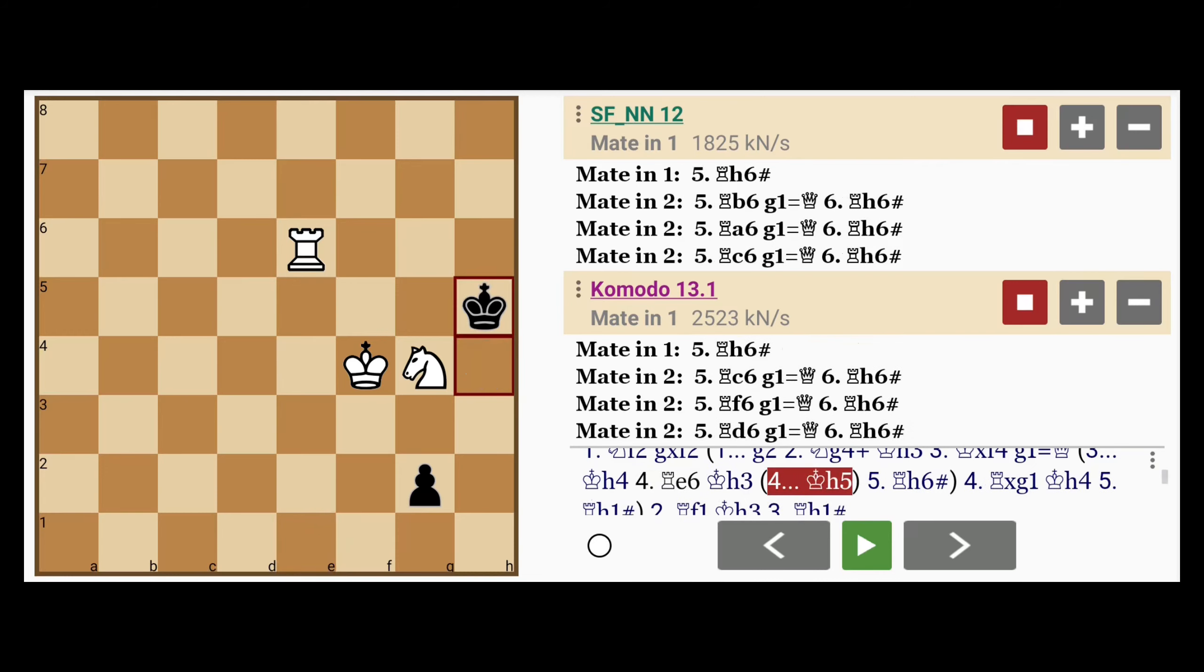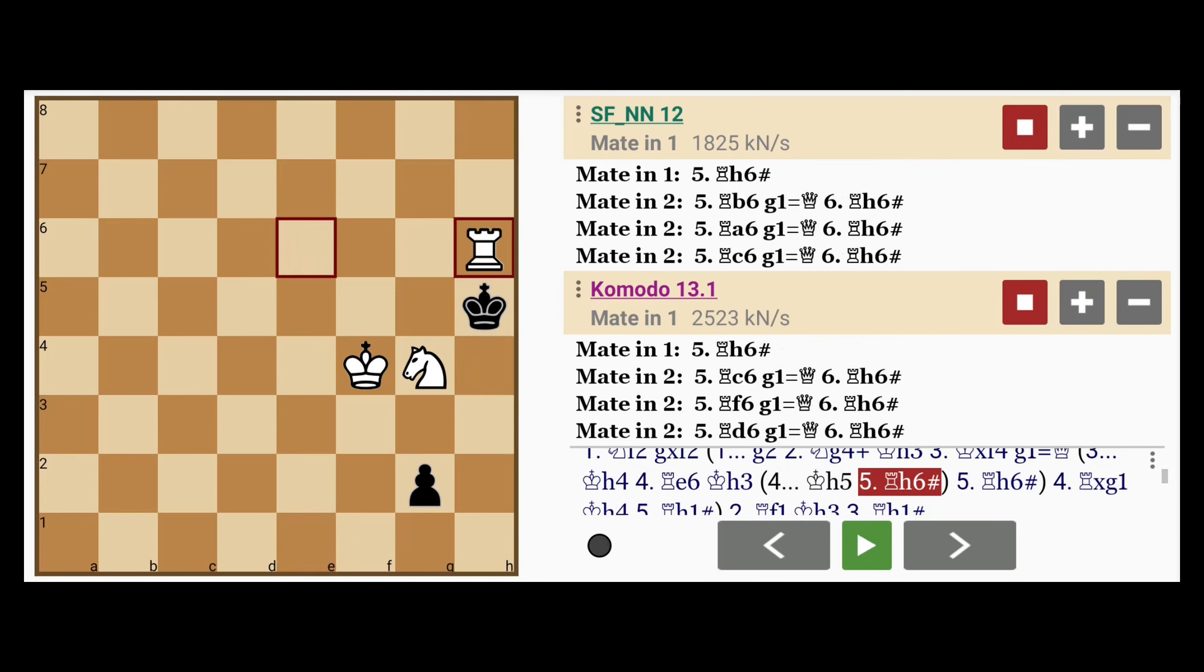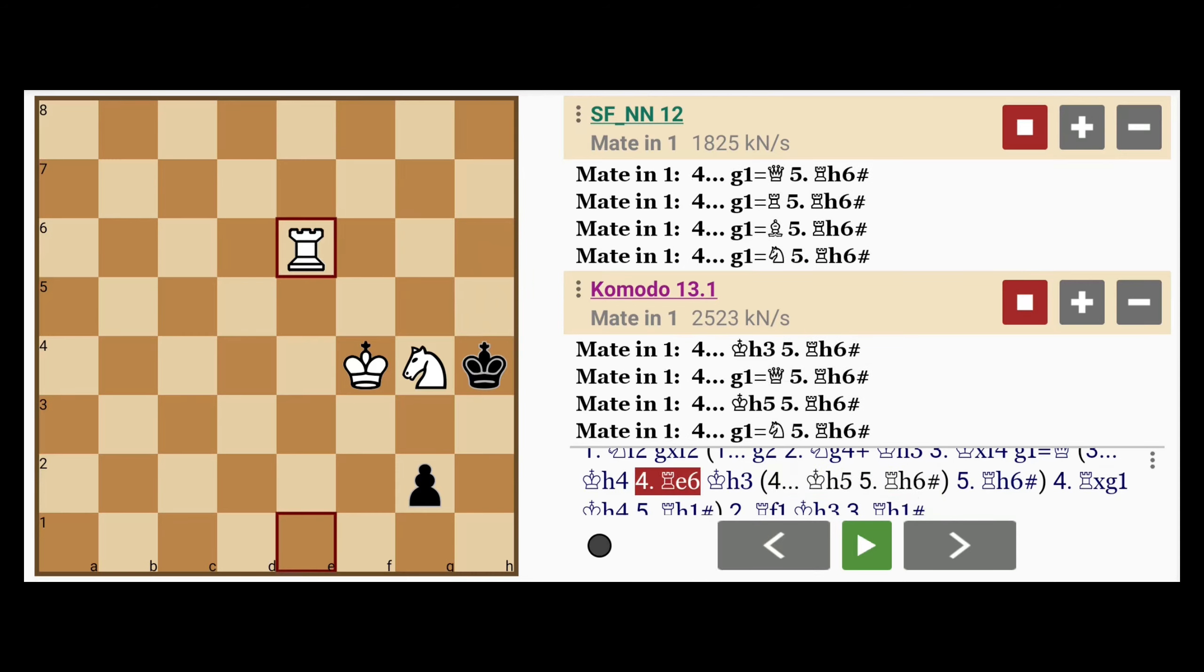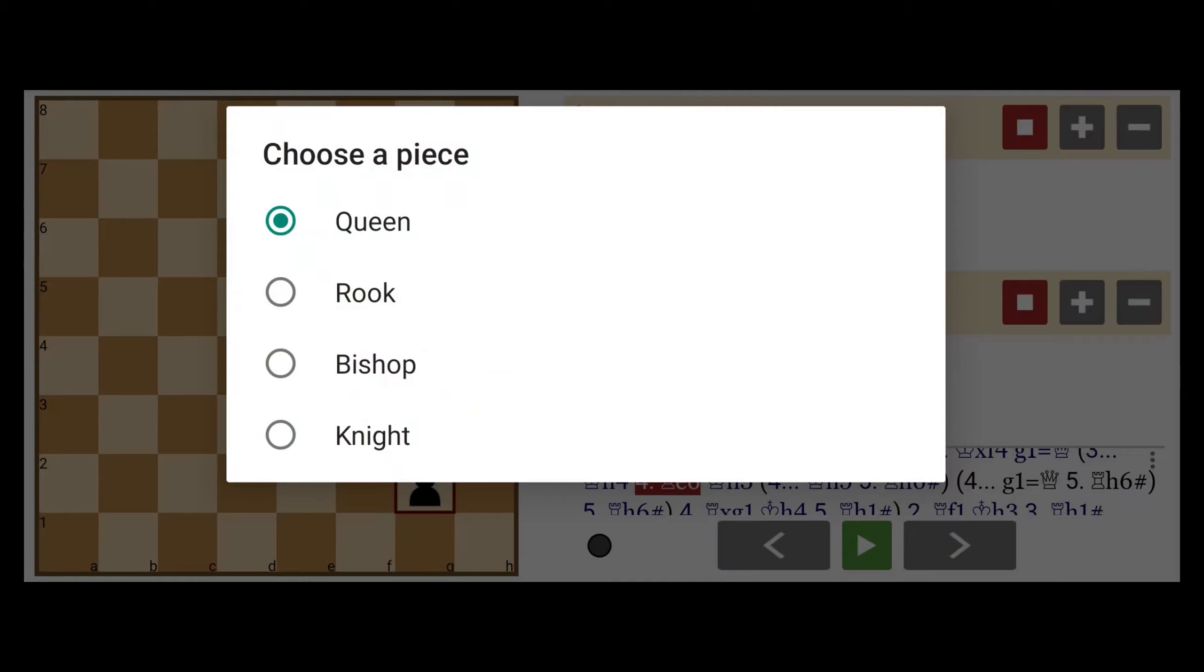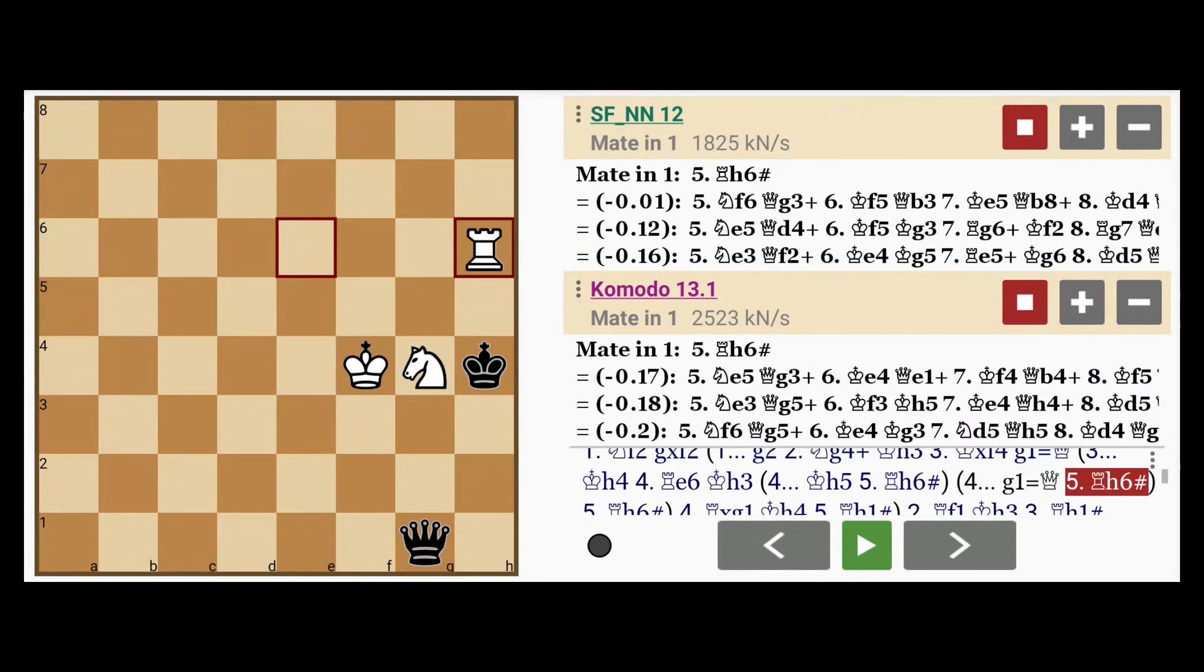And if king to h5, rook to h6 mates because the rook is defended by the knight. So there really is nothing black can do. Even promoting allows rook to h6 mate.